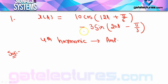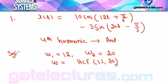Looking carefully, ω₁ = 12 and ω₂ = 20. Whatever is with t is called ω. To find the overall ω₀, we compute HCF(12, 20) divided by LCM(1, 1). LCM is 1. HCF of 12 and 20: what is common between 12 and 20? 4 comes out. After taking 4 common, what remains? 3 and 5. So the overall ω₀ is 4, meaning the signal is periodic.